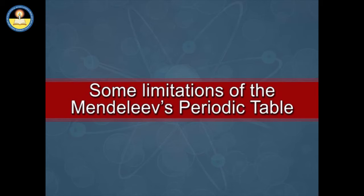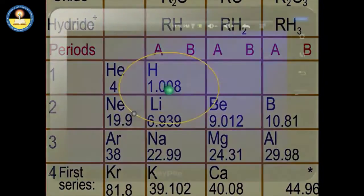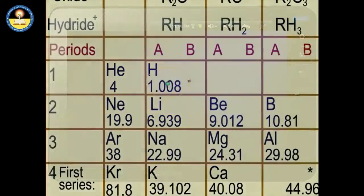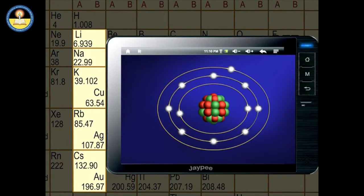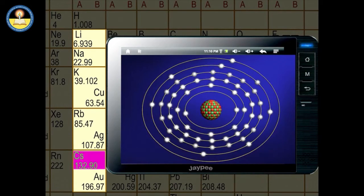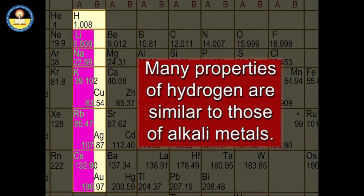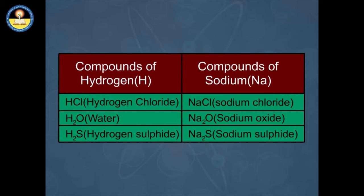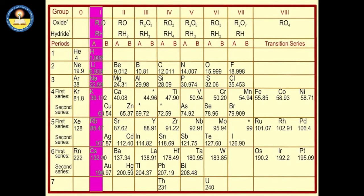Some limitations of Mendeleev's periodic table. Anomalous position of hydrogen: Hydrogen has one electron in its only shell, the K-shell. Alkali metals also have only one electron in their respective outermost shells. Therefore, many properties of hydrogen are similar to those of alkali metals. For example, like alkali metals, hydrogen combines with halogens, oxygen, and sulfur to form compounds having similar formulae. Thus, hydrogen can be placed along with alkali metals of group 1A of Mendeleev's periodic table.